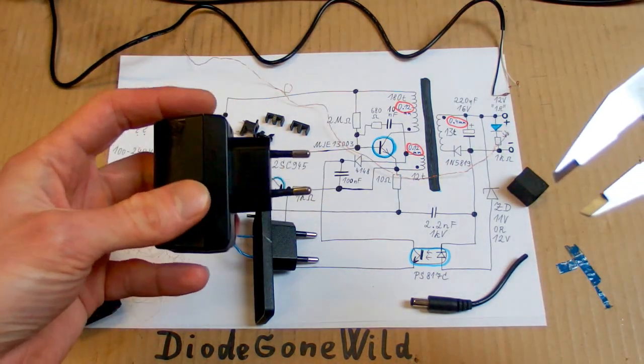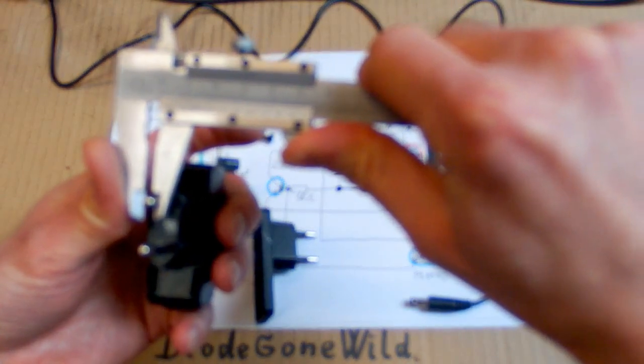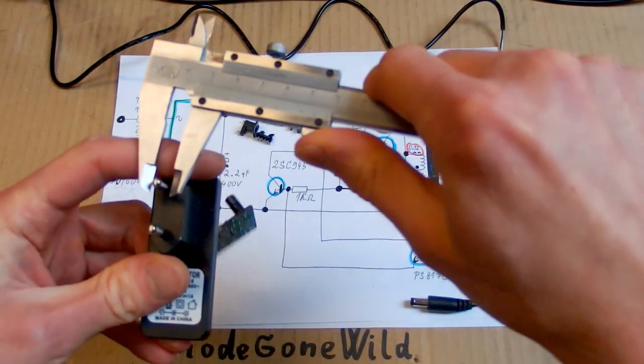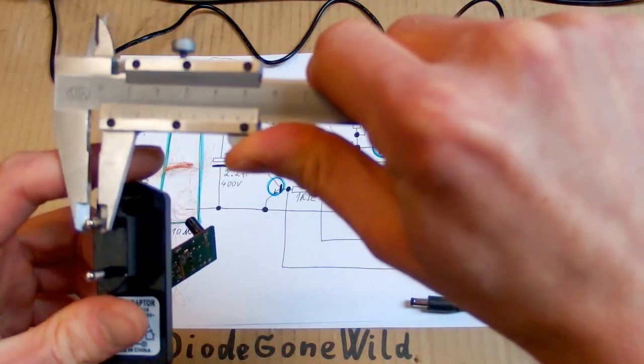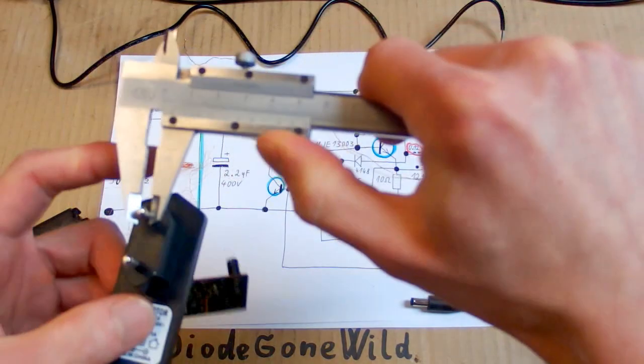The diameter of a proper European plug pin is, it seems like 4 millimeters exactly. And the Chinese one is 3.96. It's very close.